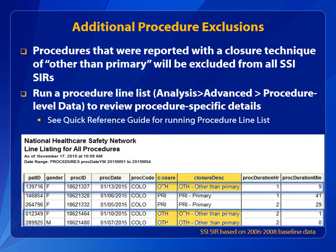Procedures with a closure technique of other than primary will be excluded from all SSI SIRs. To investigate this exclusion in the NHSN application, run a procedure line list in the Advanced folder under Analysis to review procedure-specific details. A link to a quick reference guide on how to run a procedure line list is located on the Resources page.